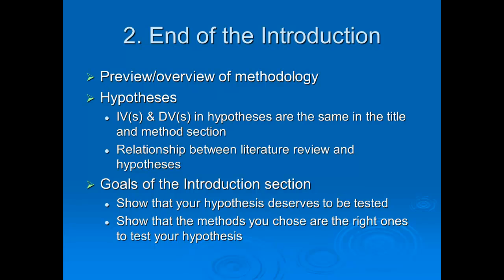The second trivial but important thing is the end of the introduction. At the end of the introduction section, right before the method section, there should be several things. First, you should have an overview or preview of the methodology. Then you should have your hypotheses. That's the way most introductions should end, and if you look at any article you'll see that in some way or another this occurs towards the end of the introduction. Your hypothesis should describe the IVs and the DVs, and they should be the same IVs and DVs in your title. You should also point out the relationship between your literature review and the hypotheses. Ending your introduction this way helps you meet the goals of the introduction section — the first goal being to show that your hypothesis deserves to be tested: why should we go through the trouble of testing this hypothesis, why is this experiment important?